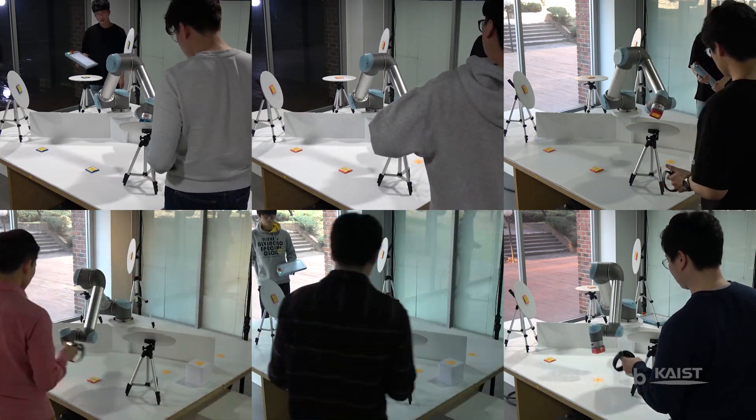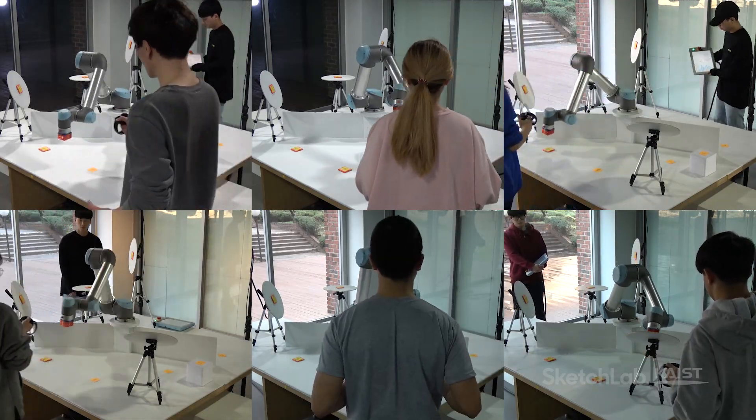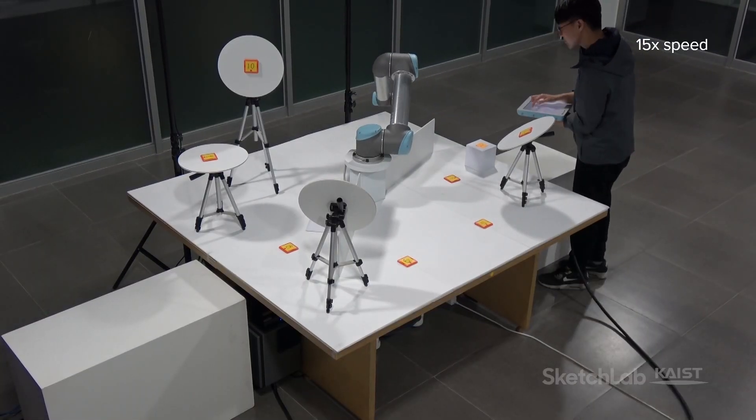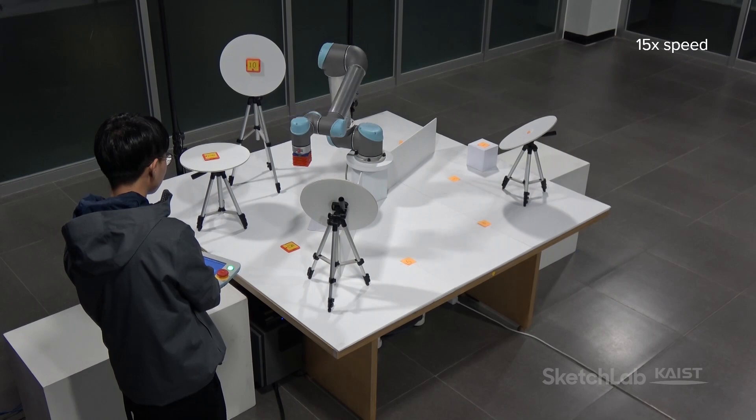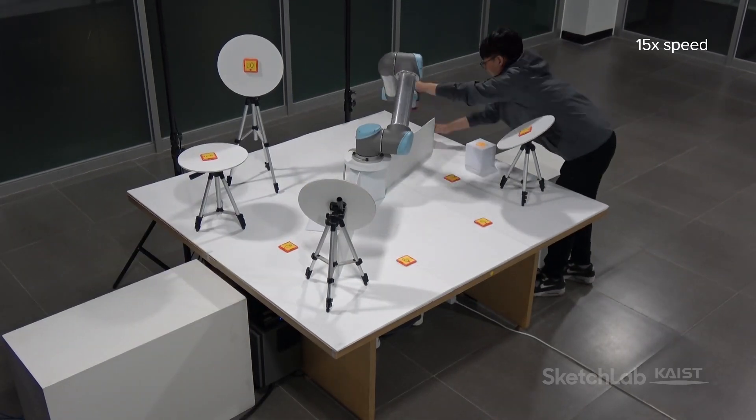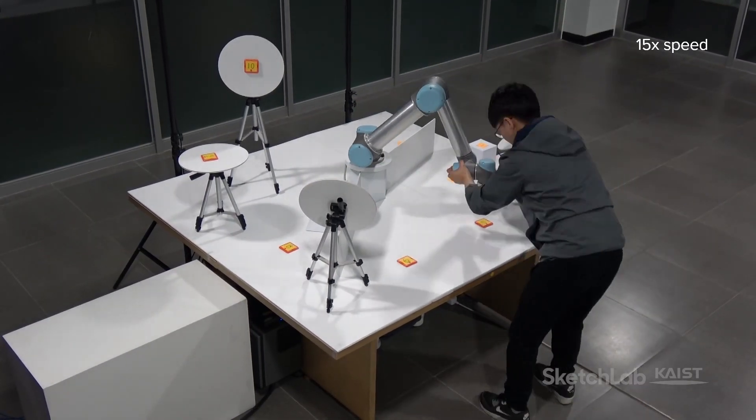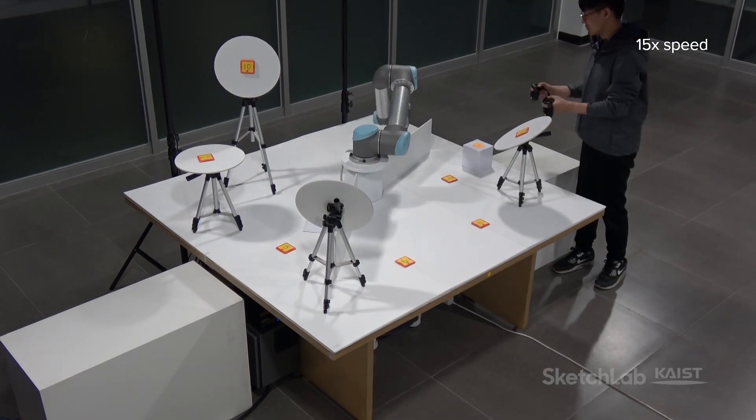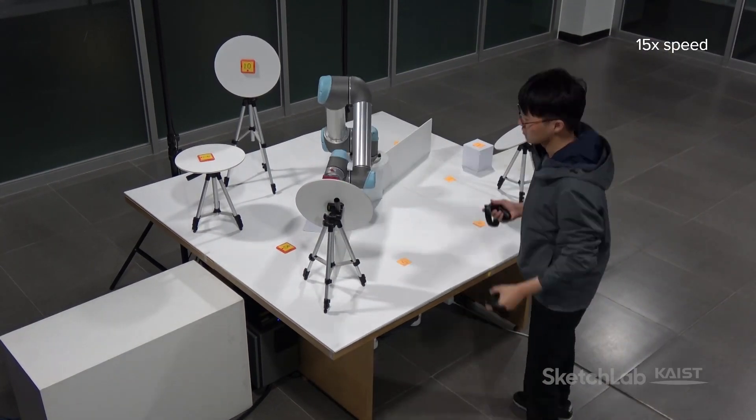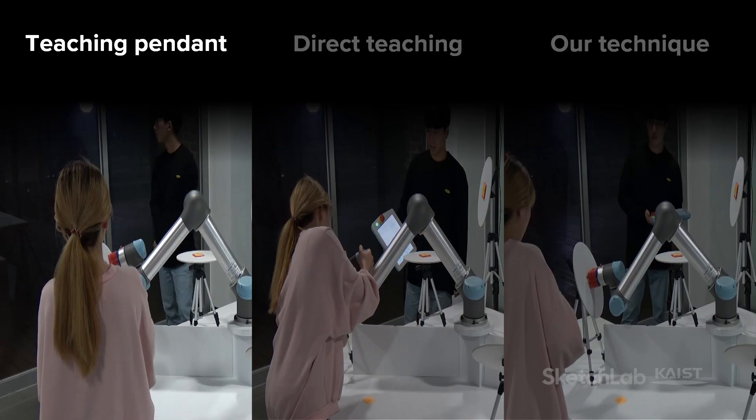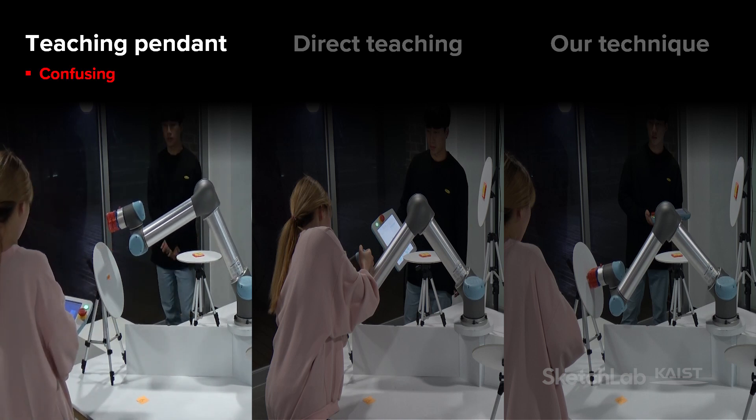We invited 6 robot experts and 6 non-experts. They sequentially collected 10 magnetic tiles placed at different positions and orientations in an arrangement that resembled a complex work environment with obstacles that block the view, the robot path, and the walking path.